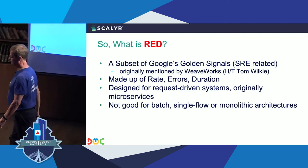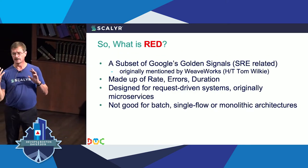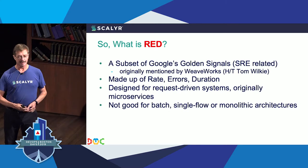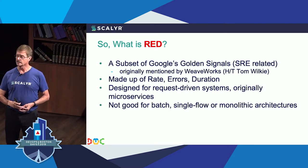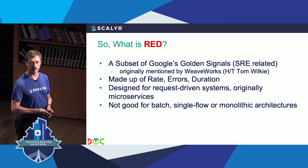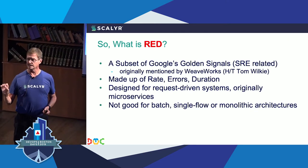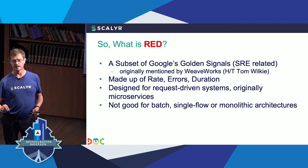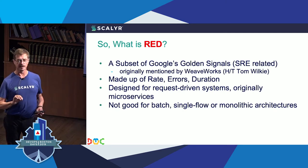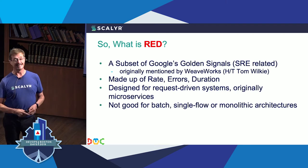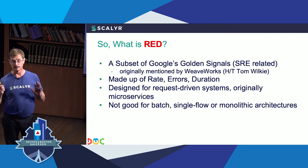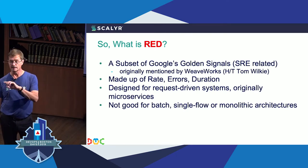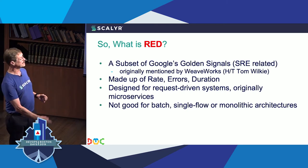Now we step into RED. RED is a spin-off of the golden signals out of Google — the Google SRE handbook talks about this. Tom Wilkie, who at that time was with WeWorks, came up with a subset designed for microservices-oriented architectures. It turns out it's really great for anything that is request-driven — any services-based or request-driven architecture. It does not work well for batch jobs, 100% streaming-type jobs, or monolithic architectures.